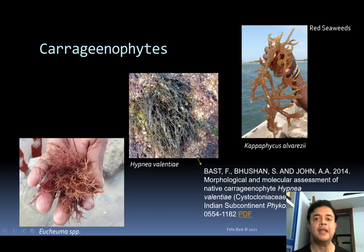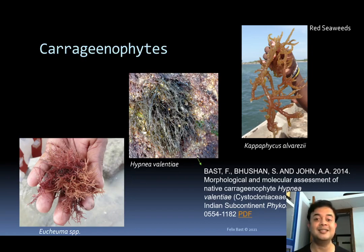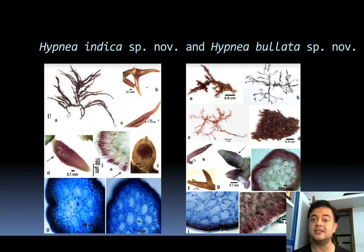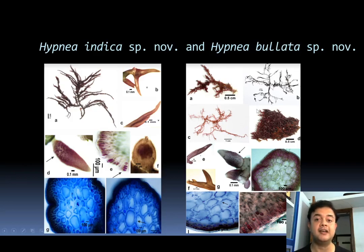Caraginophytes — Kappaphycus and Hypnea — are used for production of kappa-carrageenan food additive. Kappaphycus alvarezii is also known as 'Pepsi passi' because PepsiCo invested a lot of money in its cultivation, which is still practiced near the shores of Kanyakumari. 'Passi' means seaweed in Tamil. We are also finalizing a paper on two new species of Hypnea from India — Hypnea indica and Hypnea bullata — almost accepted in Botanica Marina.